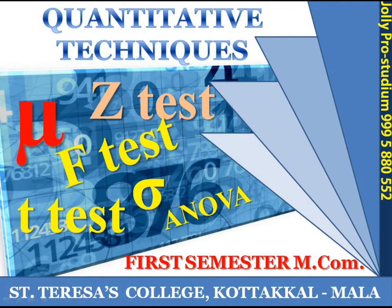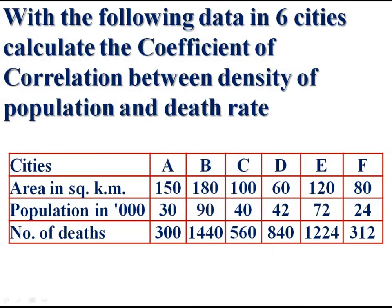Hi students. Namaskaram. Now we are discussing a practical problem in the chapter correlation. With the following data in six cities, calculate the coefficient of correlation between density of population and death rate. We are given cities, area in square kilometers, population in thousands, and number of deaths.